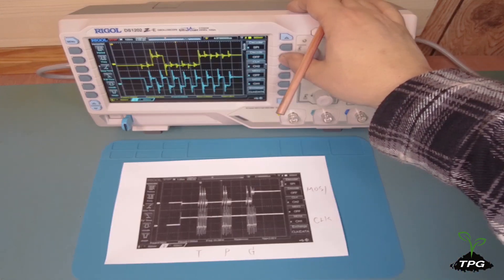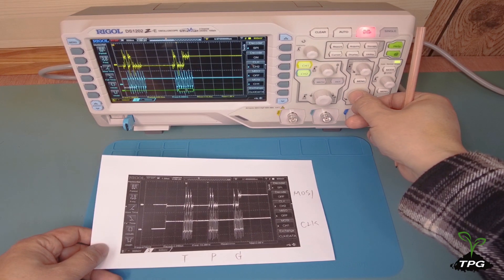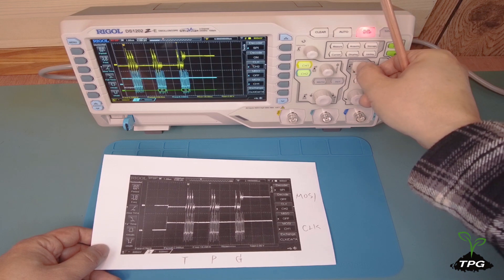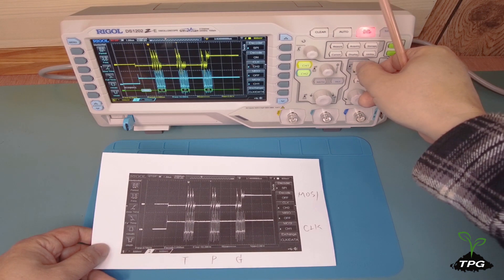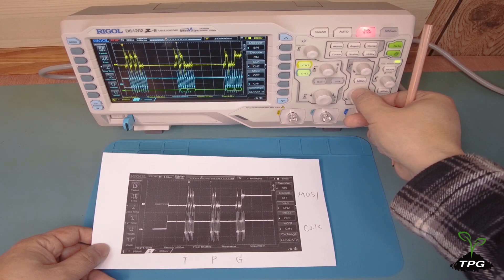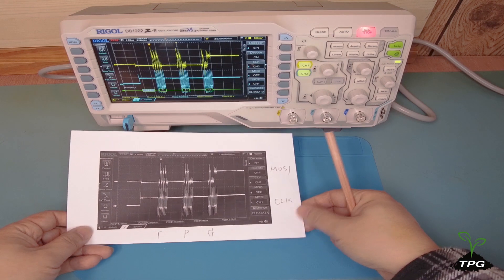As the final step, the SPI decoding function of the oscilloscope is activated to double-check the decoding result. They match each other as expected.